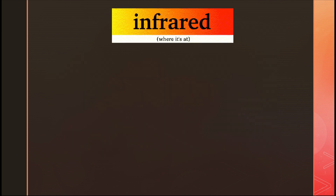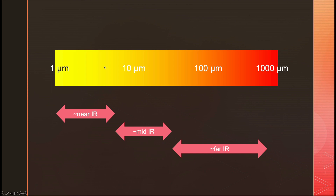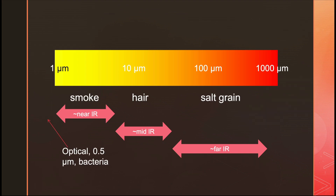Within the infrared, the wavelength ranges are roughly 1 to 1,000 microns. Near-infrared is about 1 to 10 microns — roughly the size of smoke particles. Mid-infrared is about 10 to 100 microns — about the diameter of a human hair. Far-infrared is roughly 100 to 1,000 microns — about the diameter of a salt grain. The boundaries are a little squishy. For context, optical light is about 0.1 microns, roughly the size of bacteria.